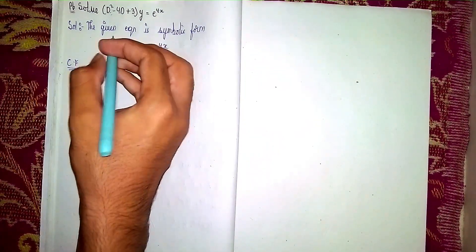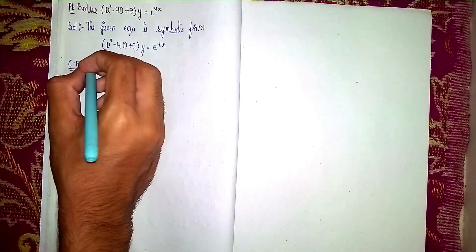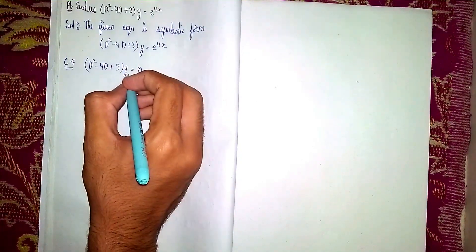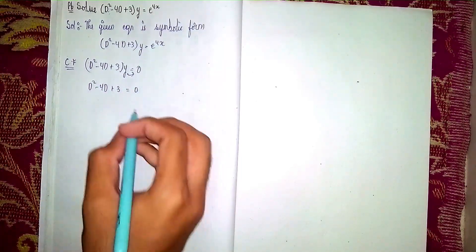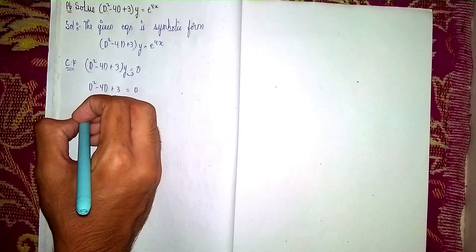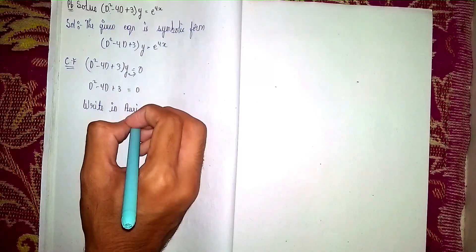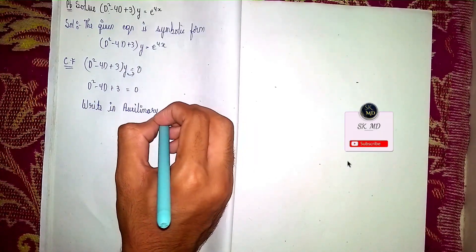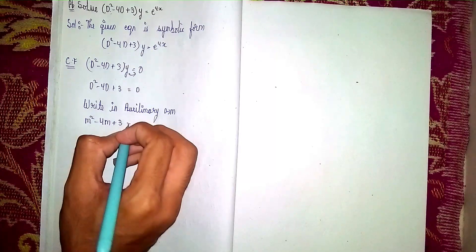For the complementary function, I take the LHS of the equation: d squared minus 4d plus 3 into y, and set it equal to 0. Removing y, we get d squared minus 4d plus 3 equals 0. Now write in auxiliary form — replacing d with m — so it becomes m squared minus 4m plus 3 equals 0.